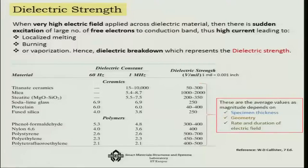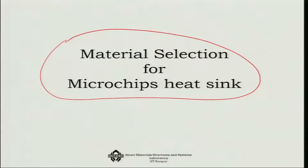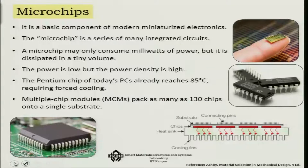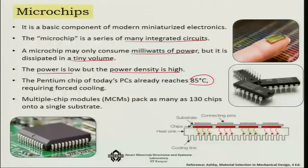Now for a material selection exercise using the Ashby chart for a non-mechanical property set: selecting a material for a microchip heat sink. Microchips contain many integrated circuits that consume milliwatts of power dissipated in a very tiny volume, resulting in high power density. A Pentium chip can reach 85°C and must be constantly cooled. Multiple Chip Modules (MCMs) pack up to 130 chips on a single substrate, requiring significant cooling — this is where the heat sink becomes critical.